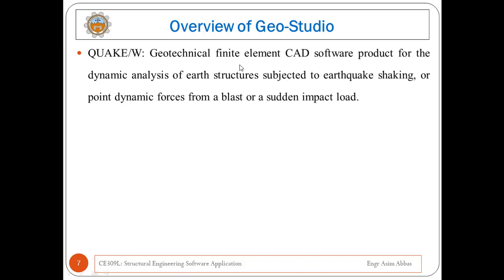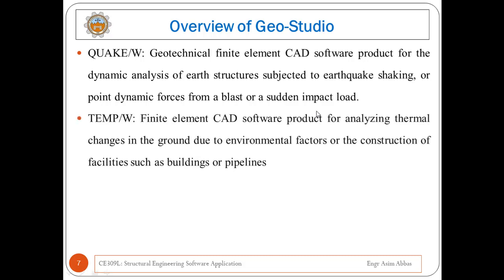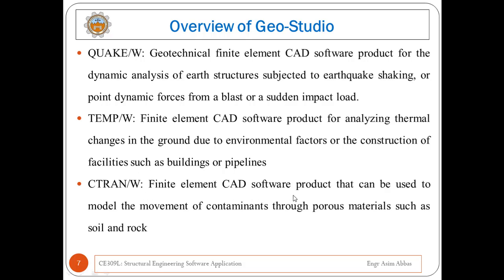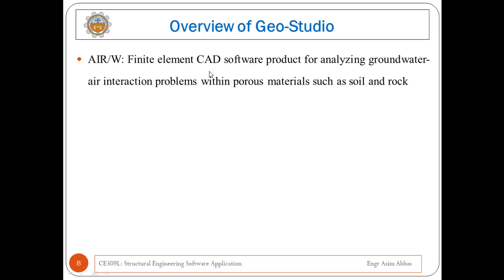Quake W is a geotechnical finite element CAD software product for the dynamic analysis of earth structures subjected to earthquake shaking or point dynamic forces from blast or sudden impact load. Temperature W is a finite element CAD software product for analyzing thermal changes in the ground due to environmental factors or construction of facilities such as buildings or pipelines. Ctran W is a finite element CAD software product that can be used to model the movement of contamination through porous materials. Air W is a finite element CAD software product for analyzing groundwater-air interaction problems within porous materials such as soil and rock.